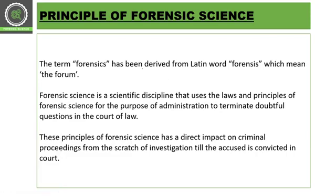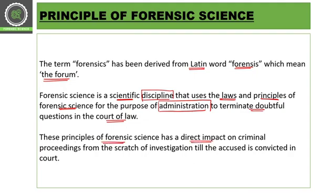Before understanding these principles, we have some basic knowledge of forensic science. The word 'forensic' comes from a Latin word 'forensis,' which means the forum, related to an open court. Forensic science is a scientific discipline that uses laws and principles of forensic science for the purpose of administration of law, or to terminate the doubtful questions in front of the court of law. All seven principles have a direct impact on criminal proceedings from the start of the investigation till conviction of the perpetrator.